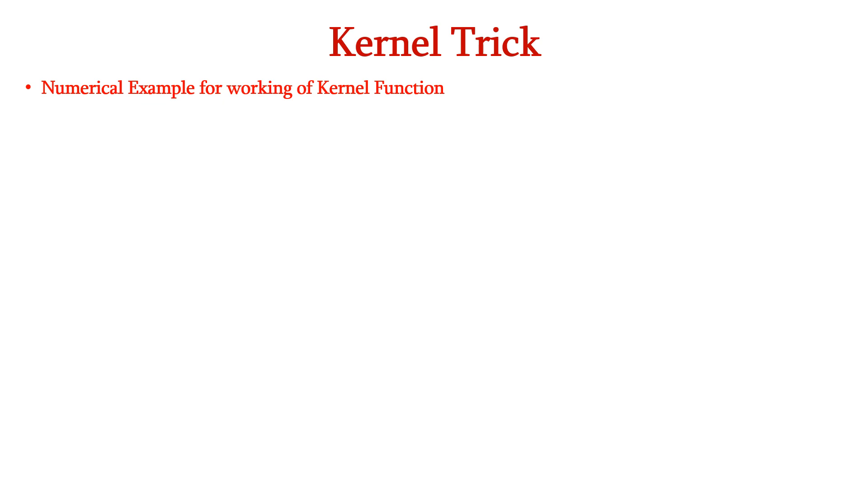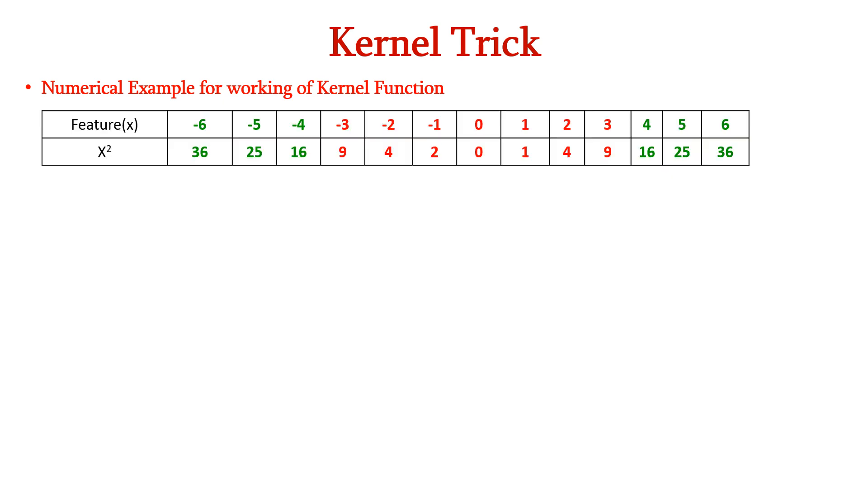Now, let us understand the working of kernel function using a numerical example. So, we have the feature x here: -6, -5, -4, up to +6. So, this is represented in one dimension and we can represent this x in higher dimension, that is in two dimensions. So, we can calculate x² for each x, which is represented as: for -6 it is 36, for -5 it is 25, and so on.